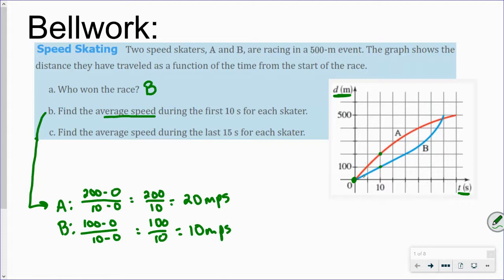Okay, so racer A in that interval or in that distance, that time, was going faster. And we can see that by the slope. Find the average speed during the last 15 seconds. Okay, so 5, 10, 15. So kind of from here forward. So we have this point for skater A and this point, and this point for skater B and this point.